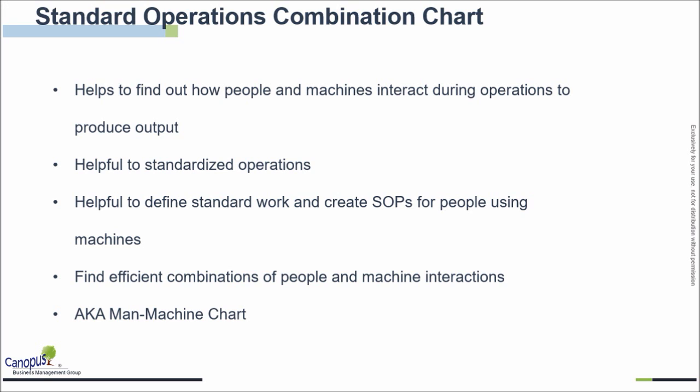In this lecture, we are going to talk about the standard operations combination chart — also called the man-machine chart, along with a few other terminologies. The purpose of this chart is to find out how people and machines interact during operations to produce the desired output.